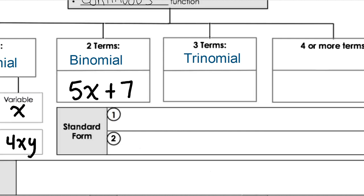A trinomial would be three monomials added together. For example, we'd have an x squared term, then add an x term like 3x, and then maybe a constant term like minus 2. When we're talking about these polynomials, each of the monomials that are added together or subtracted has its own exponent, so we couldn't combine or condense it in any way.